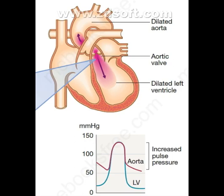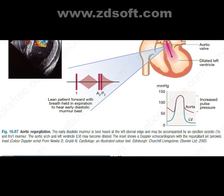The diagram also shows increased pulse pressure. The early diastolic murmur is best heard at the left sternal edge and may be accompanied by an ejection systolic to-and-fro murmur. The aortic arch and left ventricle may become dilated. The inset shows a Doppler echocardiogram with a regurgitation jet.